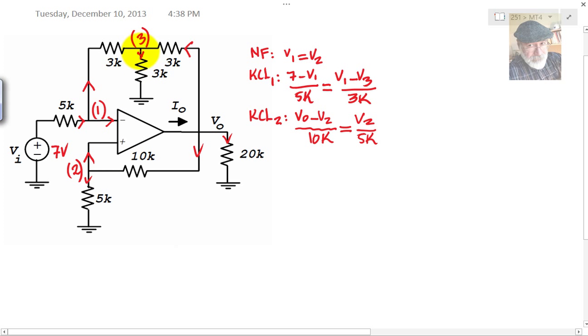KCL for node 3, this one. Current going in, 2 currents, 1 from the left, 1 from the right. And that is equal to the current leaving the node, V3 over 3. We have a system of four equations and four unknowns. V1, V2, V3, and V0. We'll solve for them.